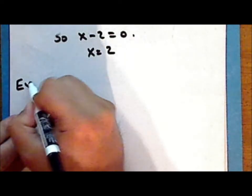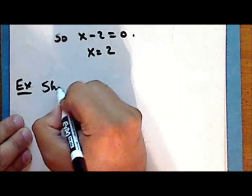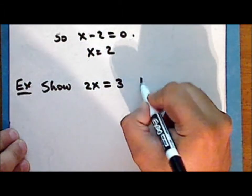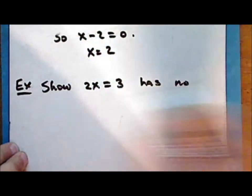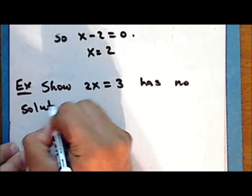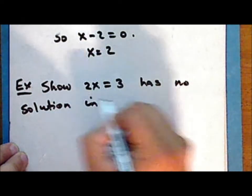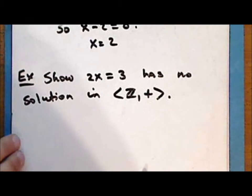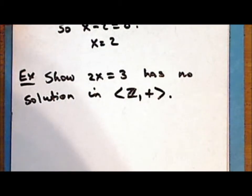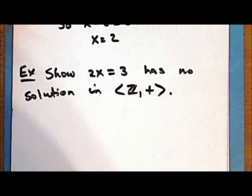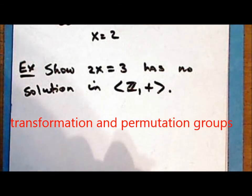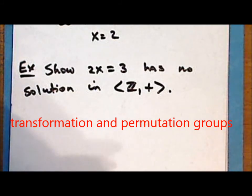As an exercise, show that the equation 2x equals 3 has no solution in the group consisting of the integers under addition. Next time we will look at commutative groups, which we call Abelian groups, and we will begin to look at translation and permutation groups. I hope you have enjoyed the second lecture — thanks for watching.